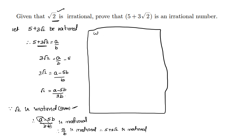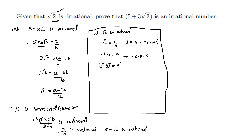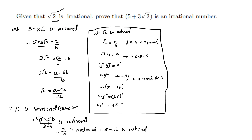Let root 2 be rational. So root 2 is equal to some x by y, where x and y are co-primes. So root 2·y equals x. Squaring on both sides: 2y² is equal to x². Since x² is a multiple of 2, x is a multiple of 2. So x can be written as some 2z. Substituting: 2y² is equal to (2z)², so 2y² is equal to 4z².